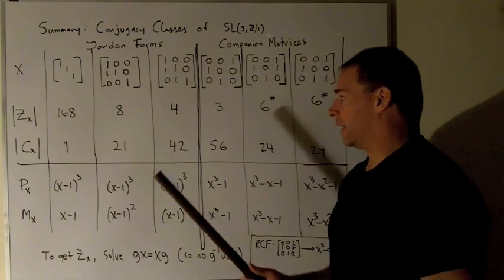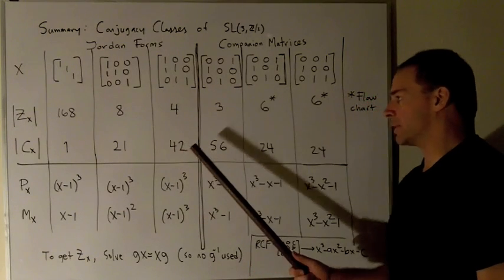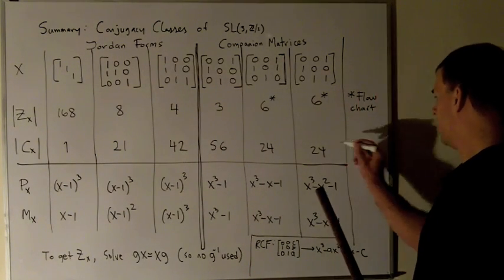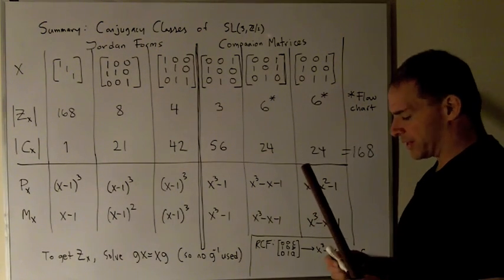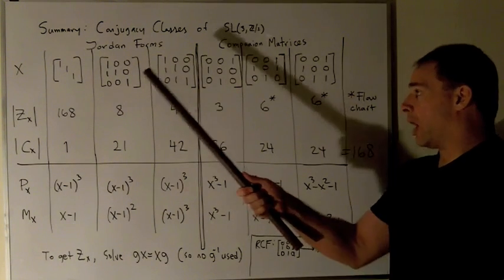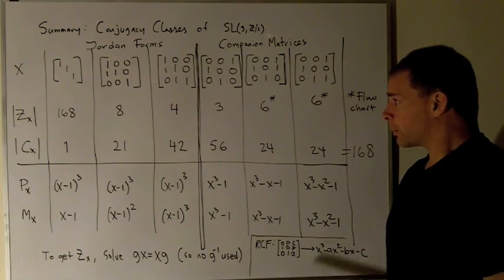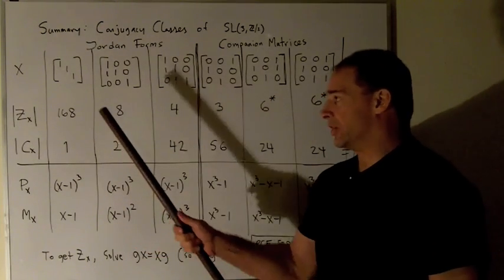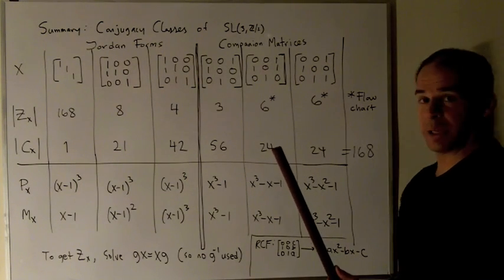So let's look at the numbers here. Well, if you take a look, one plus 21 plus 42 plus 56 plus 24 plus 24 gives me 168. So if we believe in these numbers, then these will be all the conjugacy classes that we need. Now, to get these conjugacy class orders, I need to know how to get the centralizers.